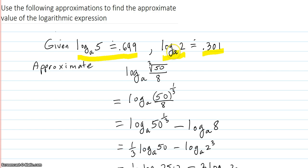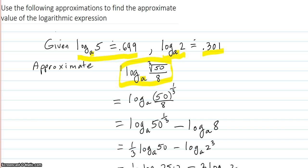The idea is that you don't know what the base A is, so you can't just put this into a calculator. They do that on purpose, so you have to know all the log rules. The goal is to pull the expression apart and get it entirely in terms of log base A of 5 and log base A of 2, and then plug the numbers in.